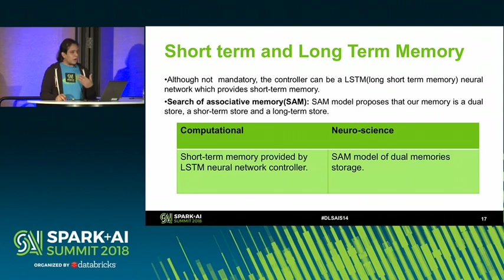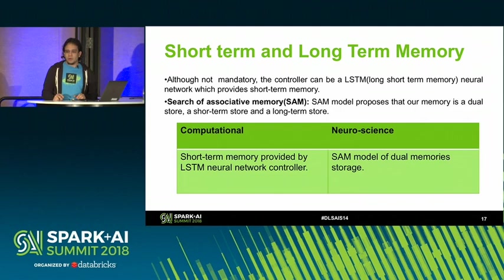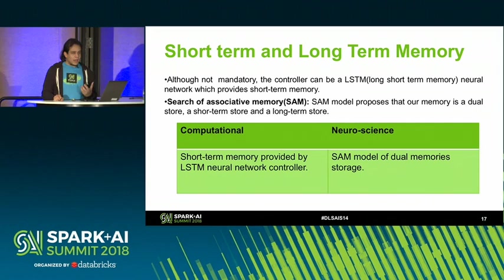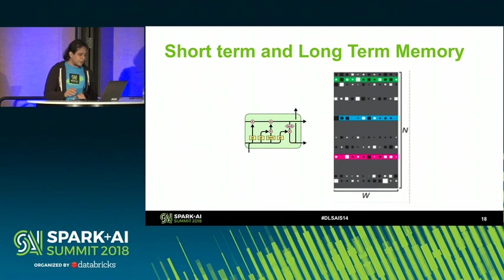We now have two attention mechanisms: similarity-based and temporal-based. The third is based on another neuroscience model called the Search of Associative Memory, or SAM model, which says we humans have a dual memory system — a short-term memory and a long-term memory. The DNC also implements this: it uses an LSTM recurrent neural network as the short-term storage, and external memory as the long-term storage.